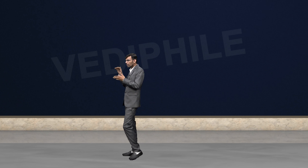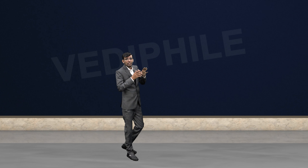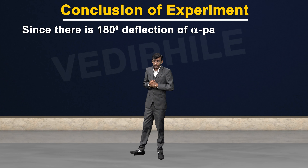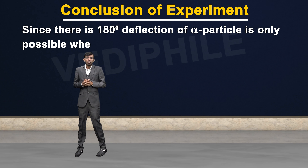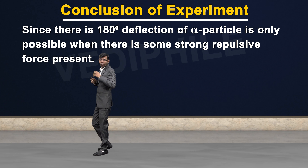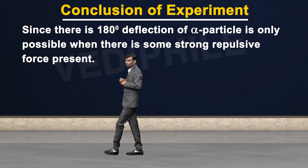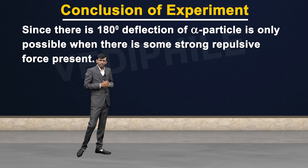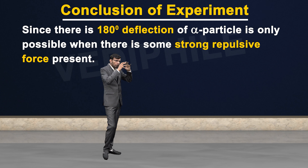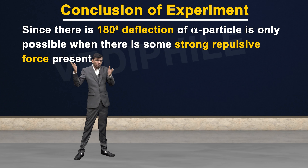So on the basis of these three observations, Rutherford concluded three conclusions. The first conclusion was that since few alpha particles get deflected at 180 degrees, it is only possible when the whole mass and a very strong repulsive force is available there, which is responsible for the 180-degree deflection. A 180-degree deflection can happen only when there is a strong repulsive force at that point.